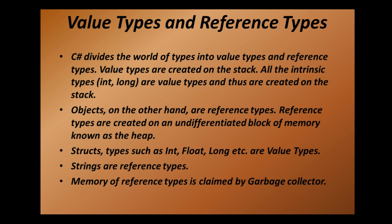Objects, on the other hand, are reference types. Reference types are created on an undifferentiated block of memory known as the heap. So there are two types of memory: stack and heap. Stack stores value types and heap stores reference types, that is, objects.